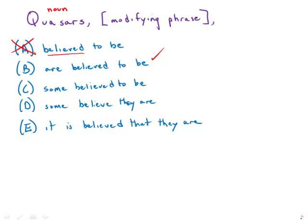Then we get to C, quasars, some believed to be. Well, this is another modifying phrase, so it turns the rest of the sentence into a modifying phrase. We get quasars, modifying phrase, and we get to the end of the sentence. We're still waiting for a verb. Again, we need a verb in the sentence. So answer choice C is out.